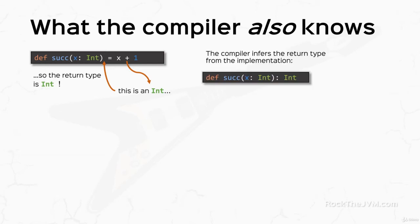So behind the scenes, the compiler actually writes the complete function signature with the return type completely specified without me needing to write it explicitly.